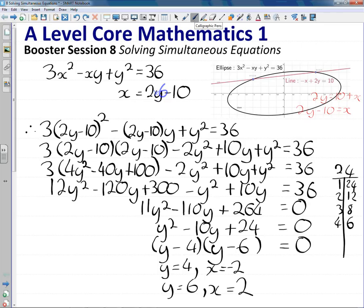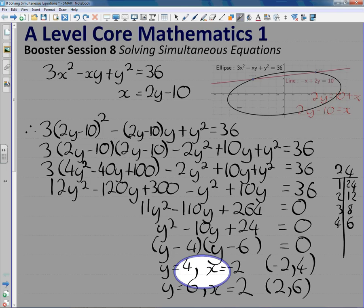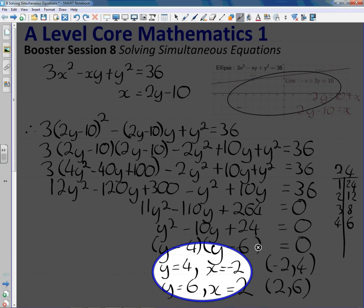So, that gives us our two coordinates. I could write them as coordinates. We could write it as (-2, 4), or (2, 6). Normally, when it says just solve them though, you'd be expected to write your answers like this.